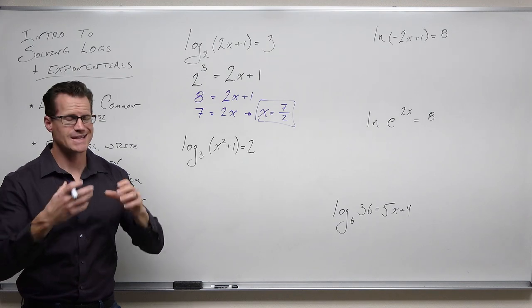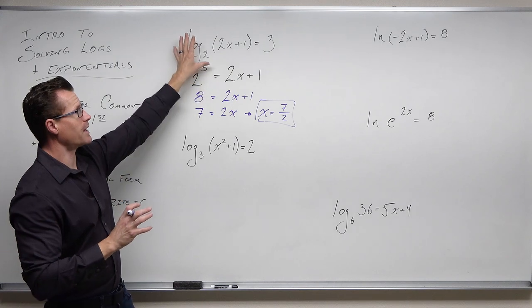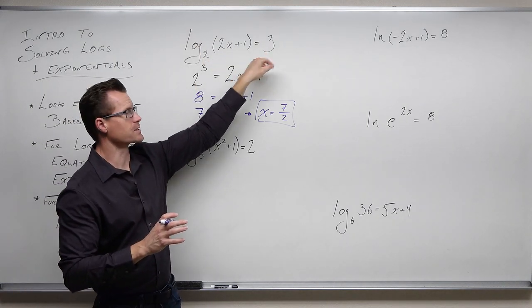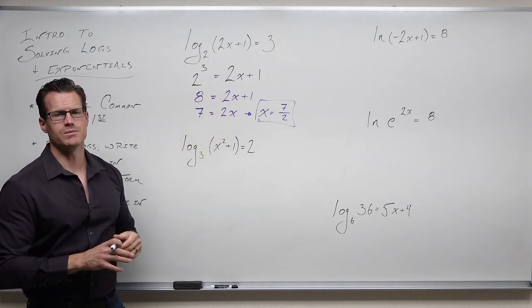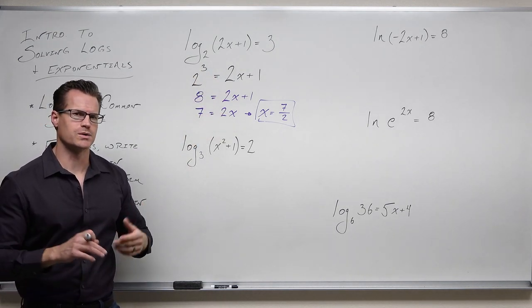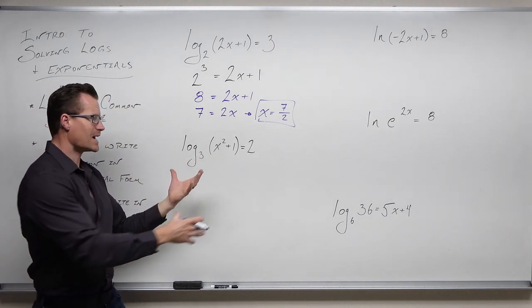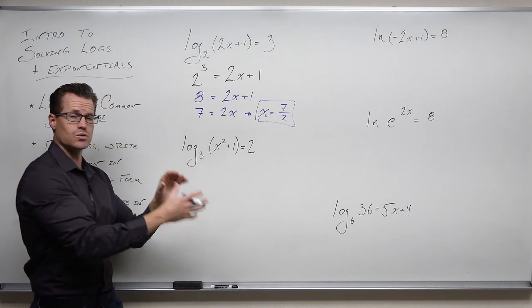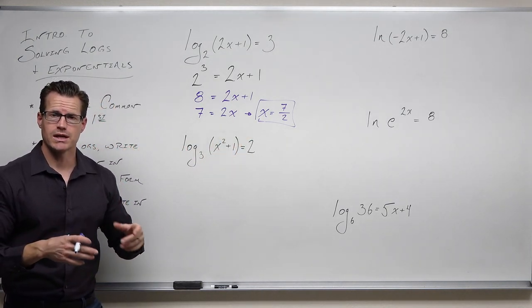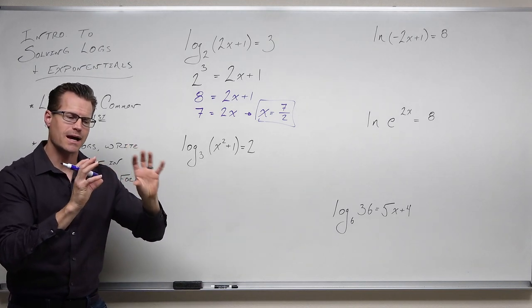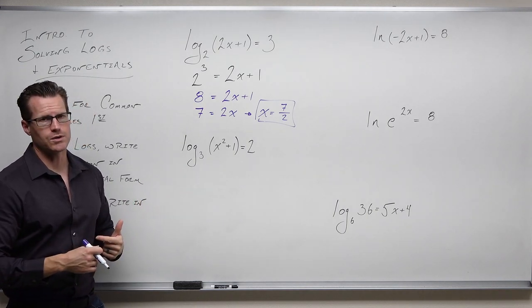That's what we do to solve logarithms: check for common bases — that takes two logarithms. If you don't have that, isolate your log: one log, one side, a constant. Then use exponential notation to solve. Exponential notation is the inverse of the logarithm, and we're going to use that inverse. It's going to be pretty easy to solve in most of these cases.